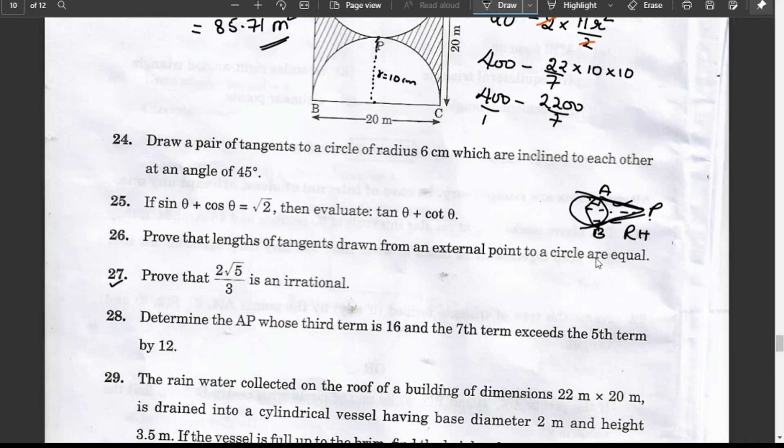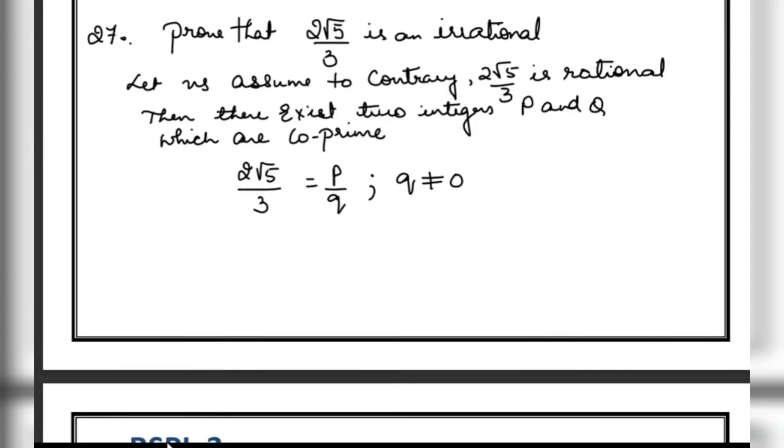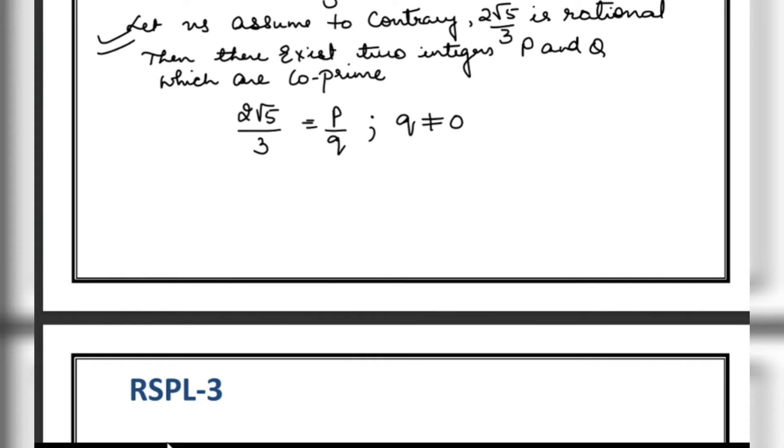Question 29: Prove 2√5/3 is irrational. Let us assume to the contrary that 2√5/3 is a rational number. These word statements are mandatory. Then there exist two integers p and q which are coprime to each other. So we write 2√5/3 = p/q.